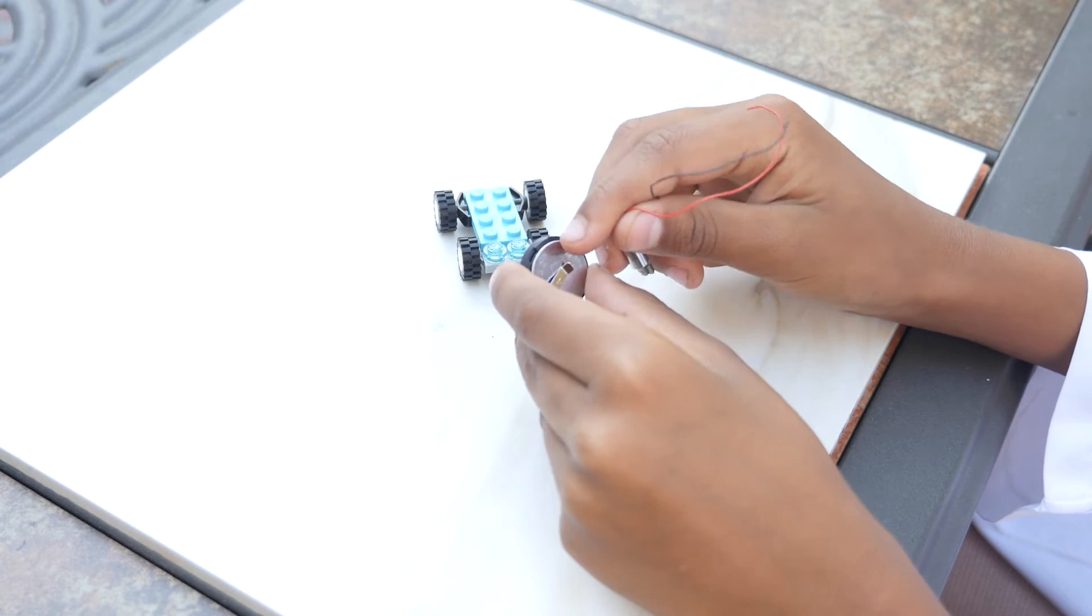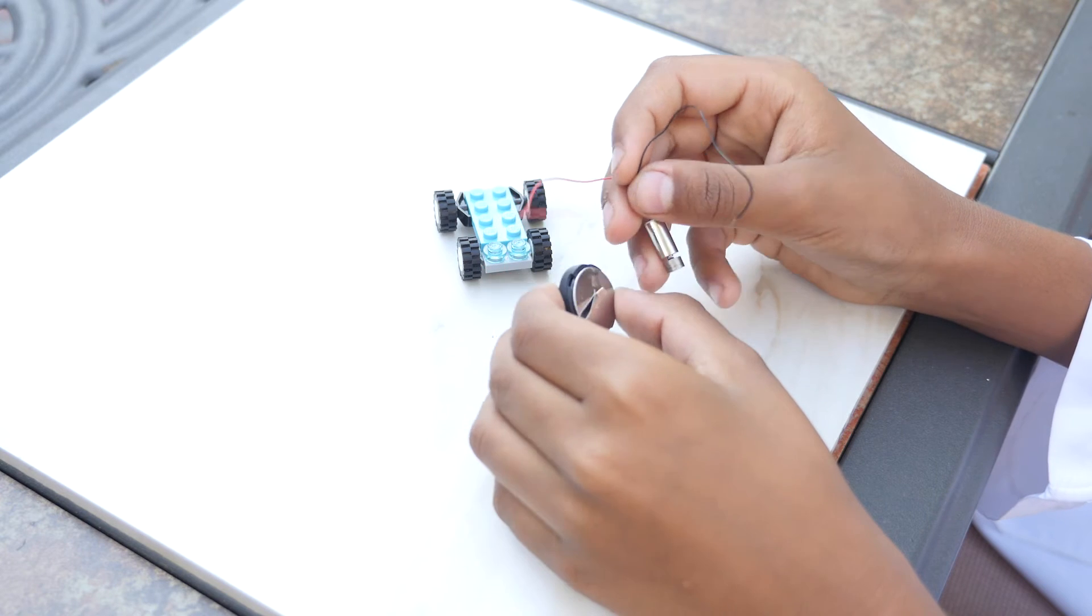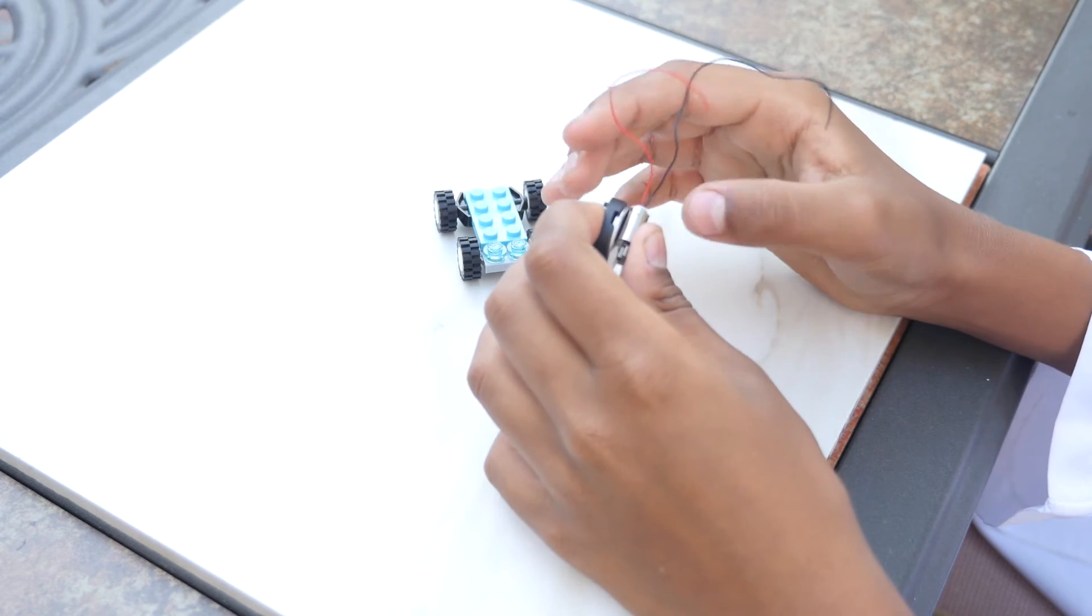Batteries also have a positive and negative side, so make sure you connect the positive to positive, and the negative to negative. Secure the entire contraption to the car using a rubber band.